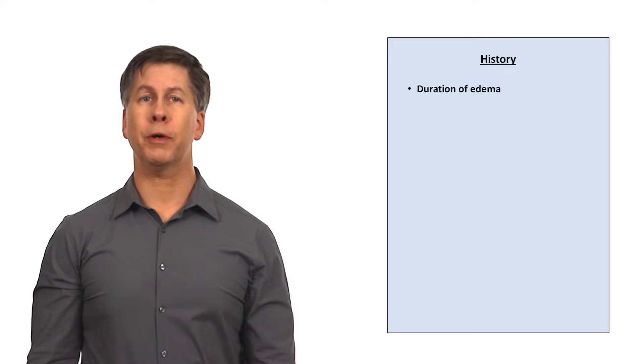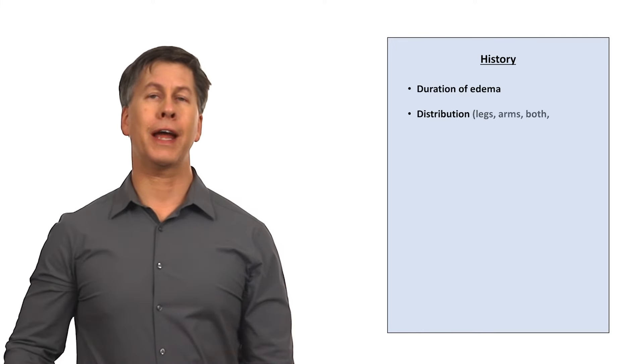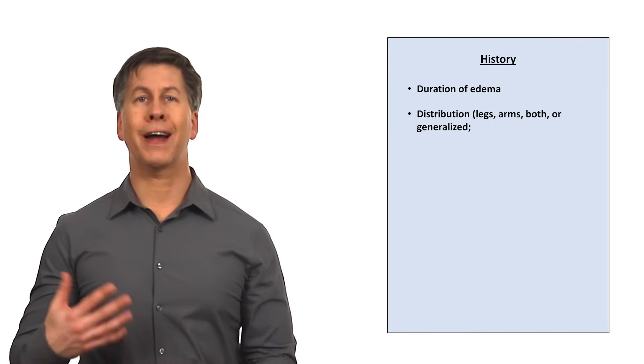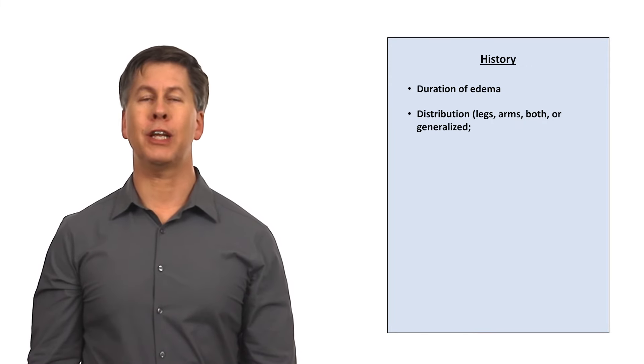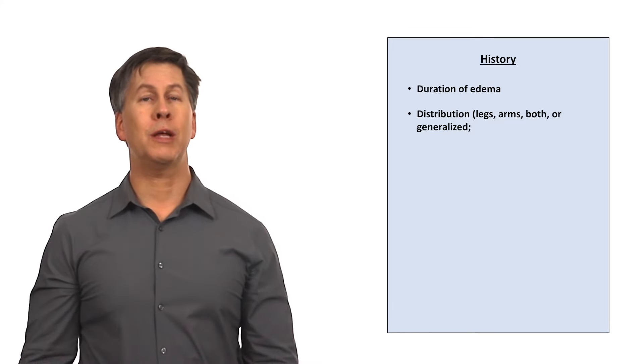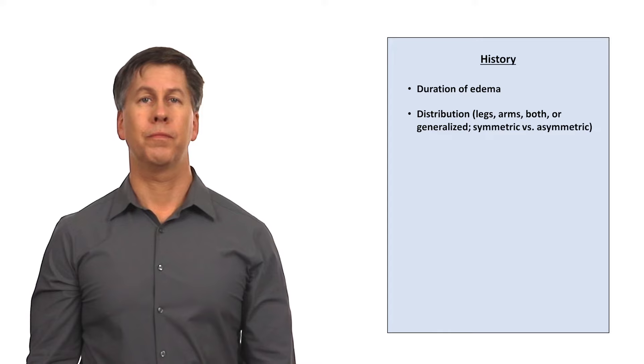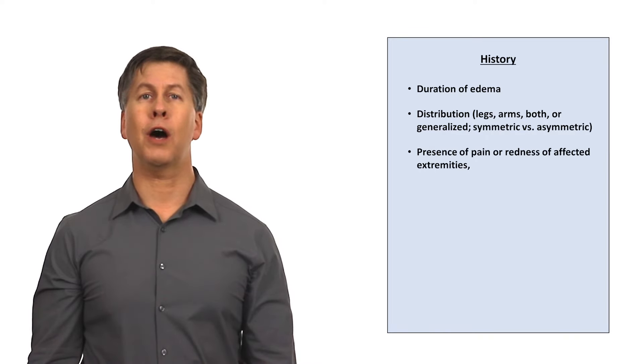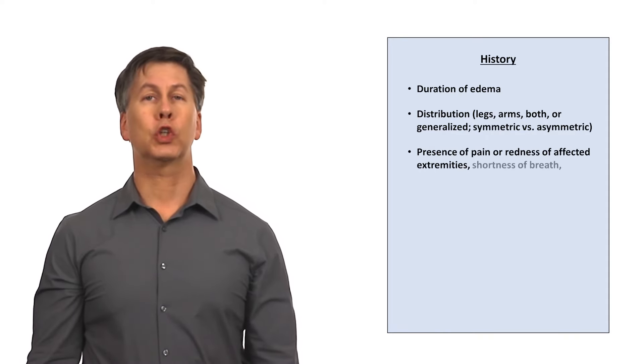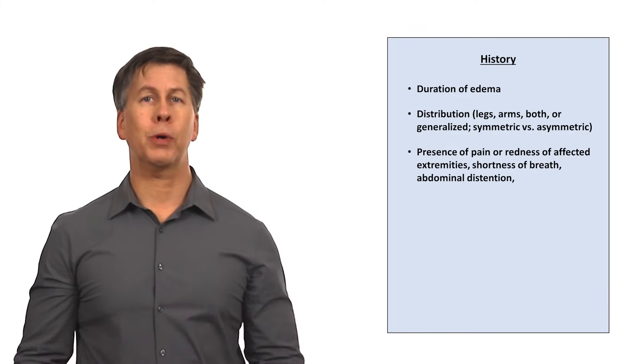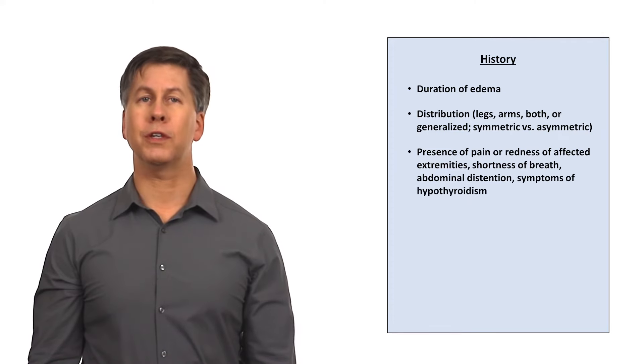When assessing a patient with edema, key questions to ask in the history include the duration of edema and its distribution, that is whether it's in the legs, arms, or both, or if it's generalized to include the entire body, which is a special case of edema called anasarca. If the edema is bilateral, it's important to know if it's symmetric or asymmetric. Ask about the presence of pain or redness of affected extremities, shortness of breath, abdominal distention that might indicate the concurrent presence of ascites, and symptoms of hypothyroidism.